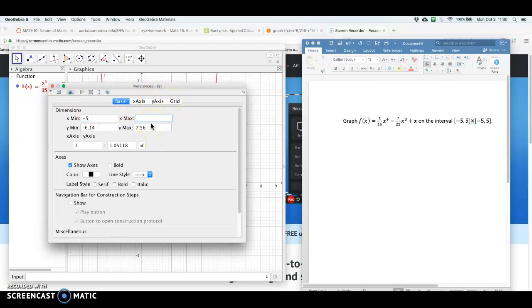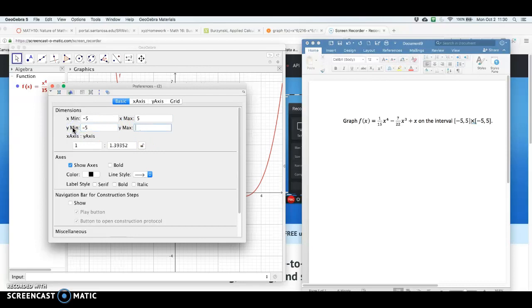Tab over, x max, make that 5, and then I want to do the same exact thing for y, make this 5 to 5.